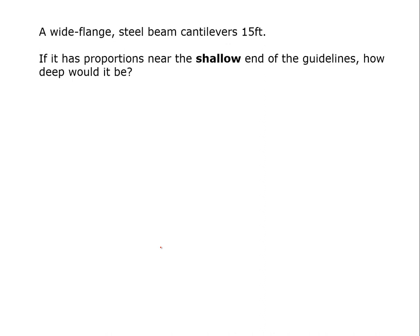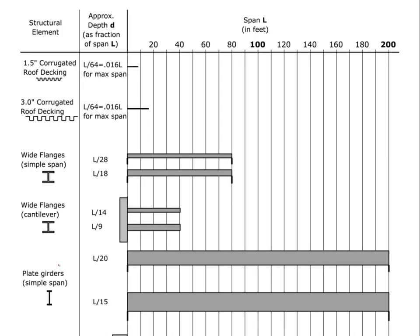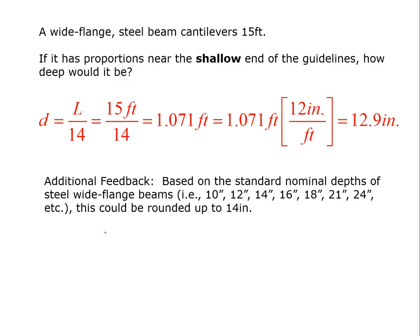All right, so let's take this wide flange steel beam and use it in a different way. Let's cantilever 15 feet and then ask, what if it has proportions near the shallow end of the guidelines? So we go back here and we say, well, here are our wide flanges used as cantilevers. Near the shallow end is L over 14. So now we're going to run our math that the depth is equal to L over 14, which is 15 feet over 14, which is 1.071 feet. And then when we convert that, we get 12.9 inches. So again, based on the standard nominal depth, we can't really get 12.9, so we probably will kick it up to a 14.